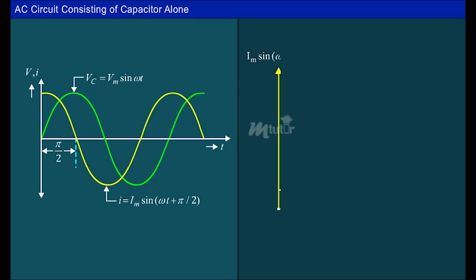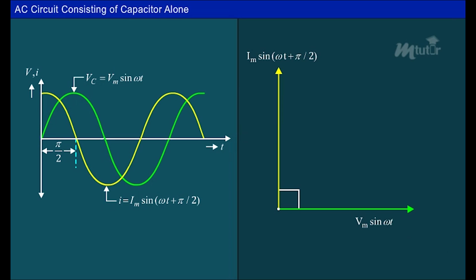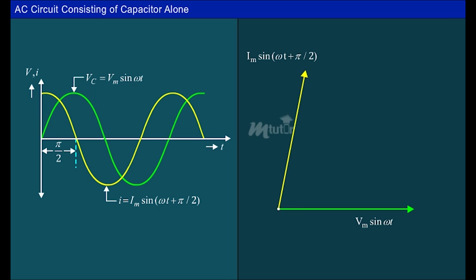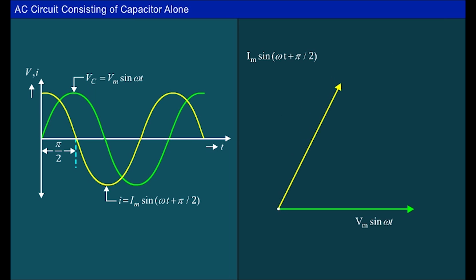The vector representation of the voltage and current of a pure capacitor is shown. In a pure capacitor, the dielectric has zero resistance and therefore zero losses, and hence the phase angle between the voltage vector and the current vector is 90°. But in actual practice, there will be some resistance in the dielectric and hence some losses, so the phase difference will be less than 90°.